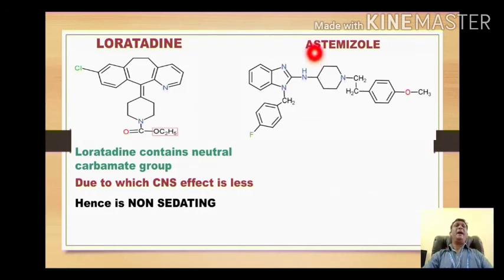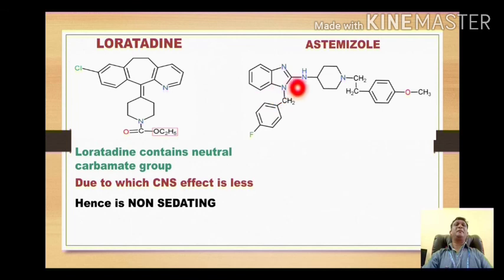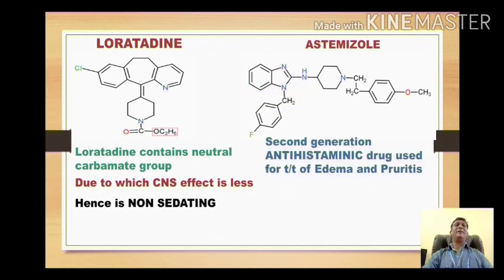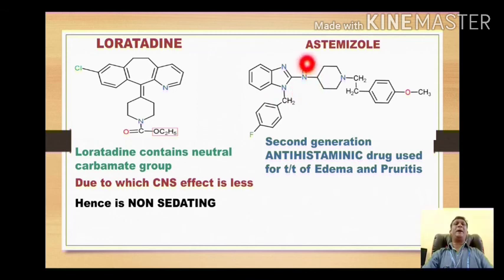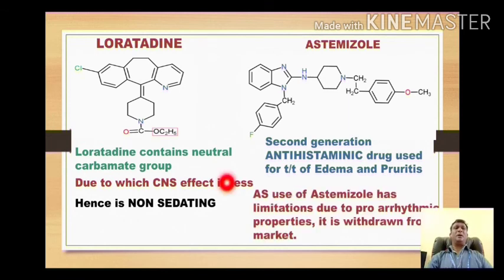The next compound is astemizole, which is chemically a derivative of benzimidazole — more especially a 2-aminobenzimidazole derivative. The 's' in the name stands for the anisole-like structure (where a methoxy group is attached on the phenyl ring), and 'zole' stands for the presence of the 2-aminobenzimidazole. This drug is used for treatment of edema and pruritus, but it was observed that some arrhythmic actions are produced by astemizole, and thus this compound is now withdrawn from the market.